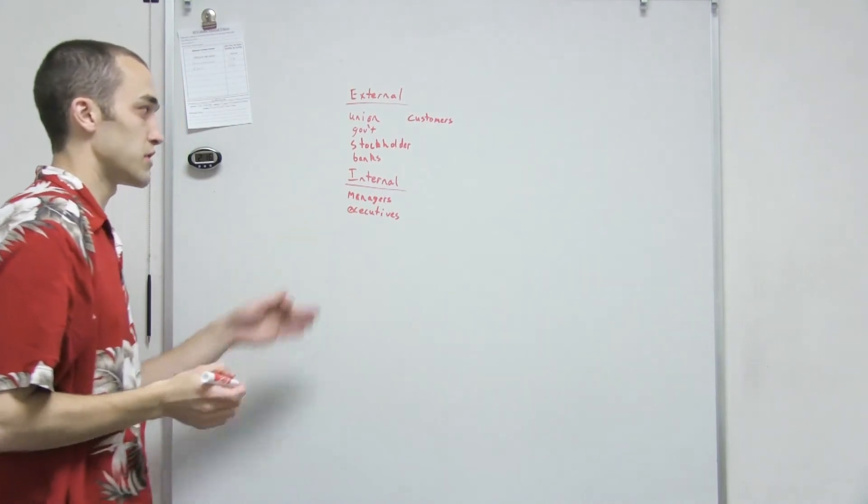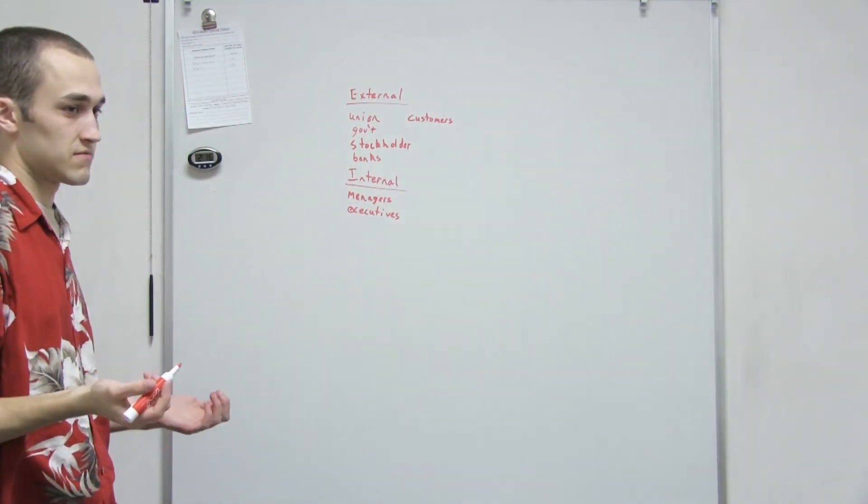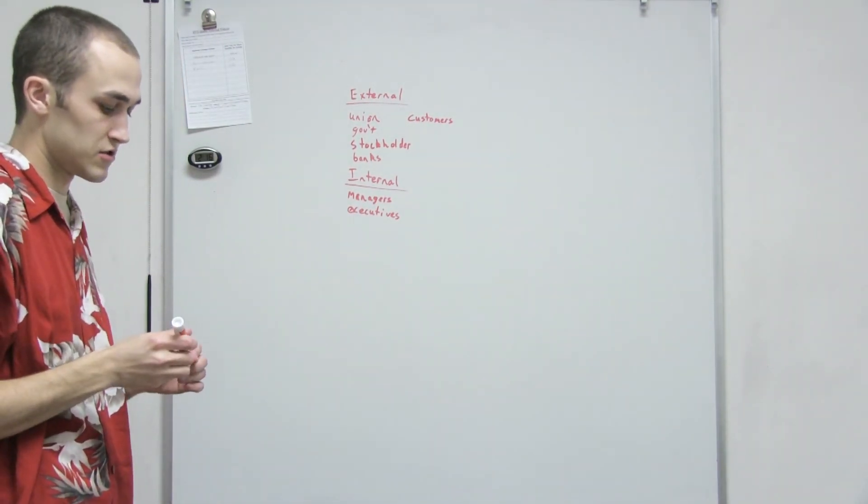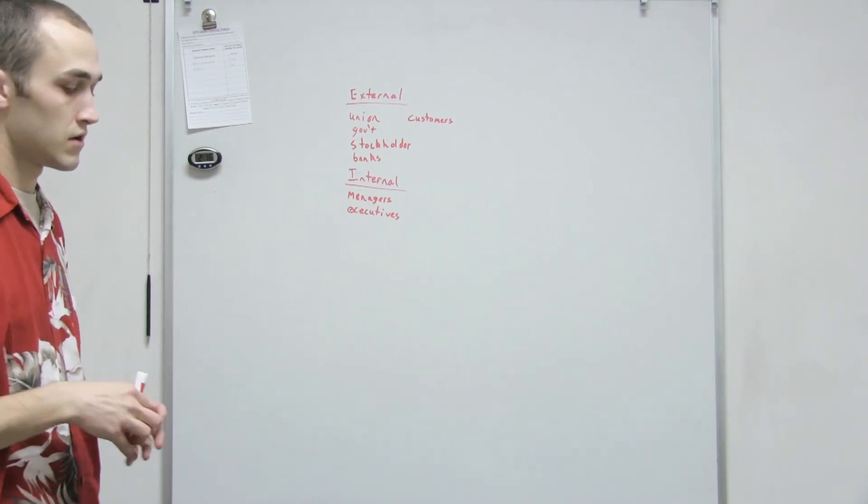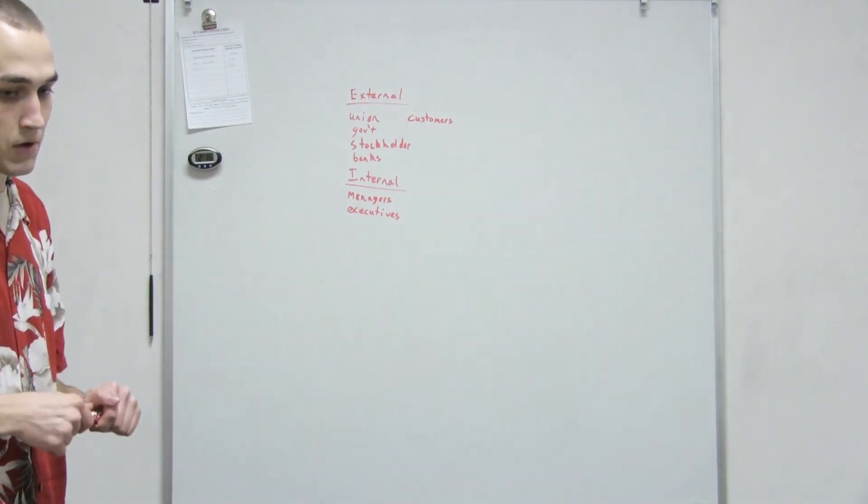So the internal list is pretty short because it's just any supervisors, leaders, anybody in a position to actually do something with that information.